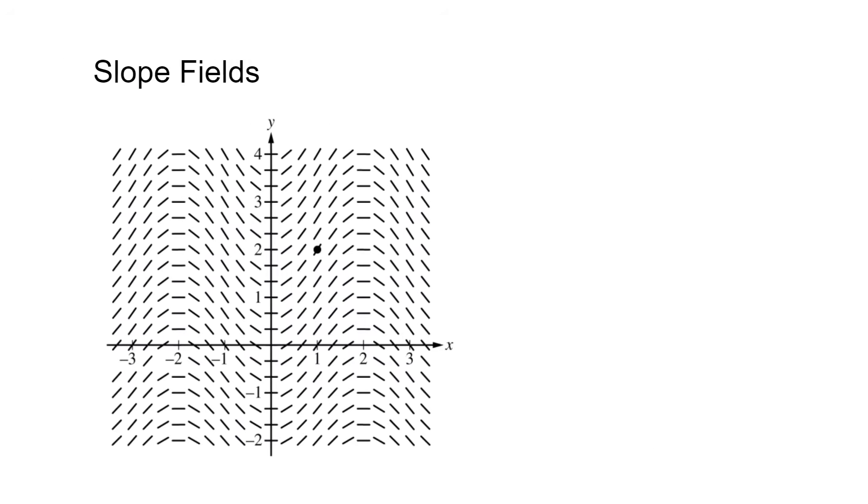Slope fields are graphs of the solutions to a differential equation. Basically, it shows the derivative of a function at each xy coordinate through small lines. They indicate slope and a horizontal line is drawn for a slope of 0 and a vertical line symbolizes the slope does not exist.